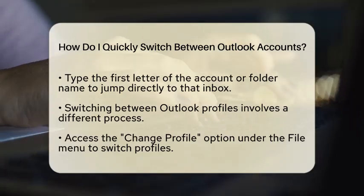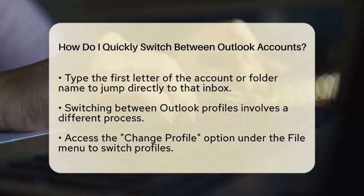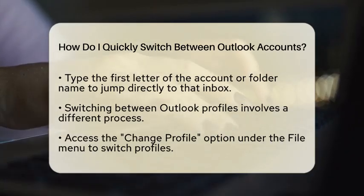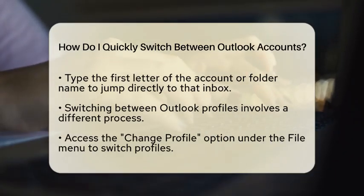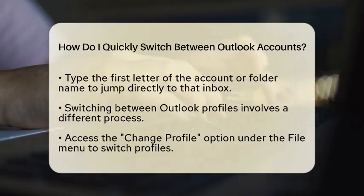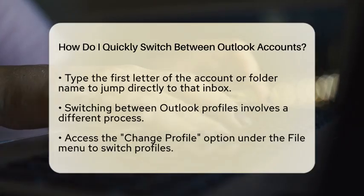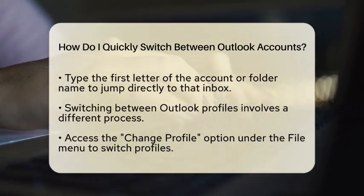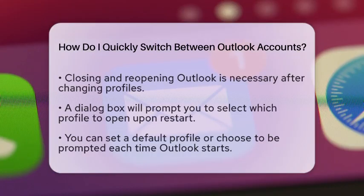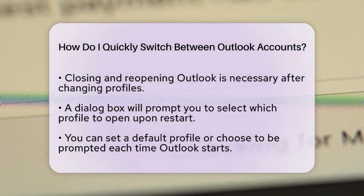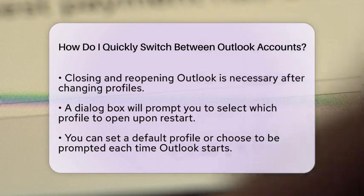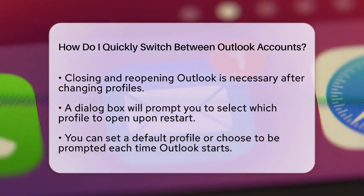If you need to switch between different Outlook profiles, the process is slightly different. Outlook profiles are separate configurations that can hold different sets of email accounts and settings. To switch profiles, go to the Outlook menu, click on File, then Account Settings, and select Change Profile. After that, you will need to close and reopen Outlook. When it reopens, a dialog box will appear allowing you to choose which profile to open. You can even set a default profile or opt to be prompted to select a profile each time you start Outlook.